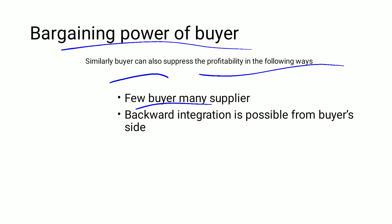Buyers reduce profitability in two situations: when there are many suppliers but buyers are limited, buyers can demand lower prices and better quality. Also, backward integration is possible from the buyer's side. If the buyer is backward integrated, meaning the buyer can produce the raw material themselves, then the supplier's business can fail. The buyer gains bargaining power and can negotiate strongly — saying if you don't offer better terms, I will make the product myself.